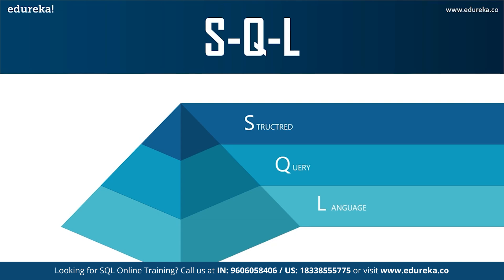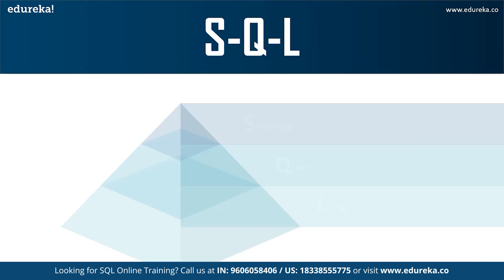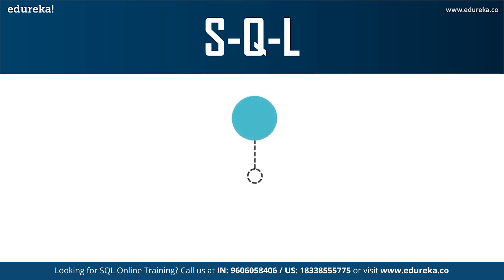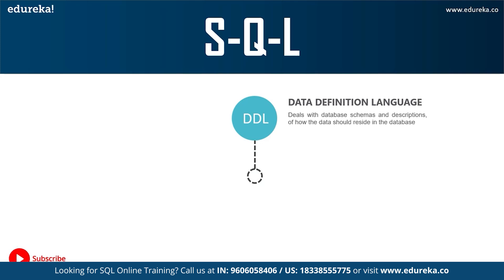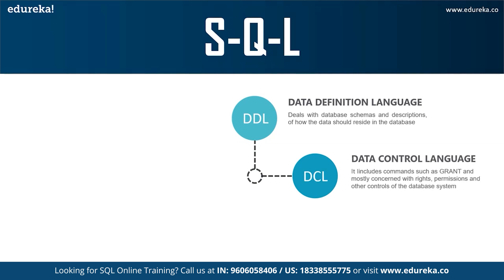The different subsets of SQL commands are as follows. First, DDL — Data Definition Language — deals with the description of the database schema and is used to create and modify the structure of database objects. It allows you to perform operations such as CREATE, ALTER, and DELETE. DDL is very popular and extensively used. Next is DCL — Data Control Language — which allows you to control access to the database, granting or revoking user access privileges using the GRANT command.